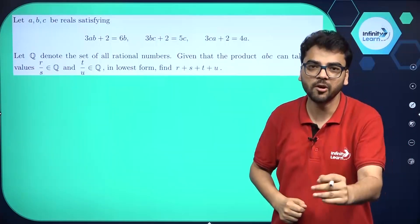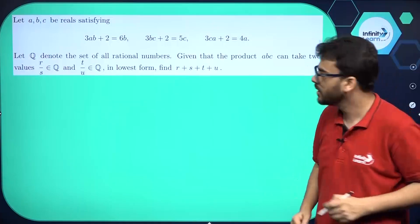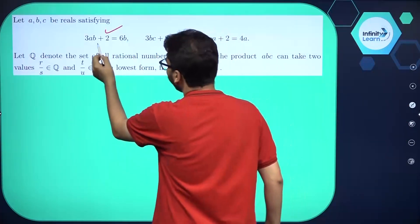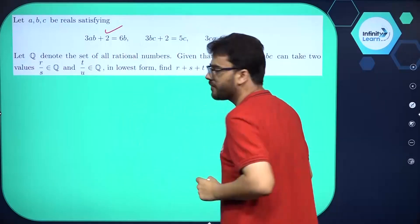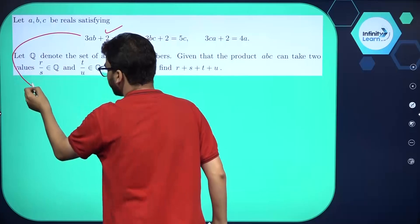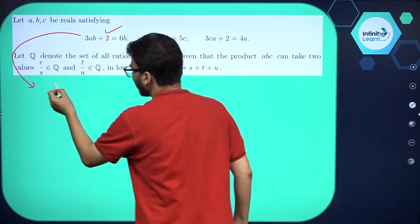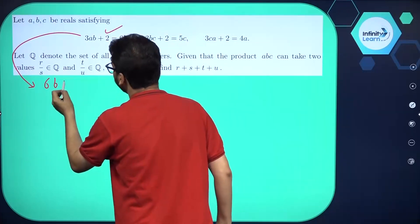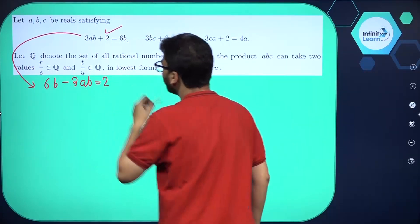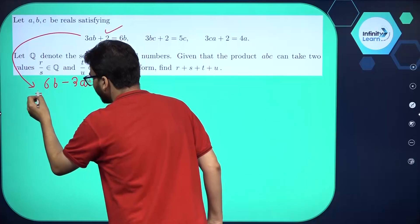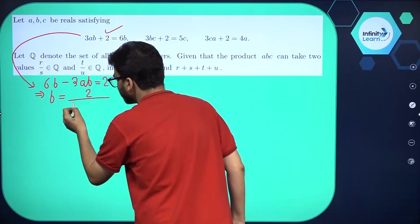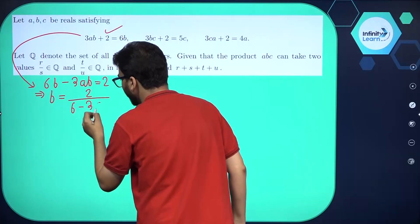We can do a couple of substitutions here. From the first equation, can I write B in terms of A? If I take the first equation, I can write 6B minus 3AB equals 2. Taking B as common, I get B equals 2 divided by (6 minus 3A).